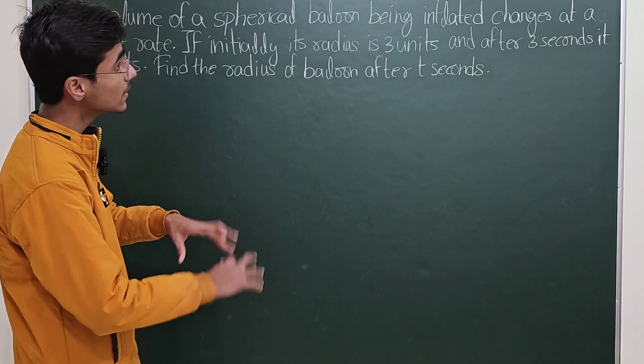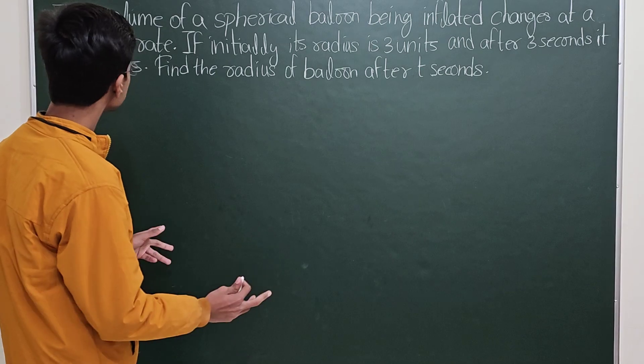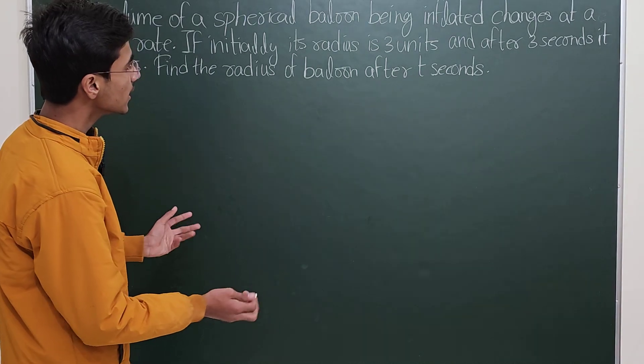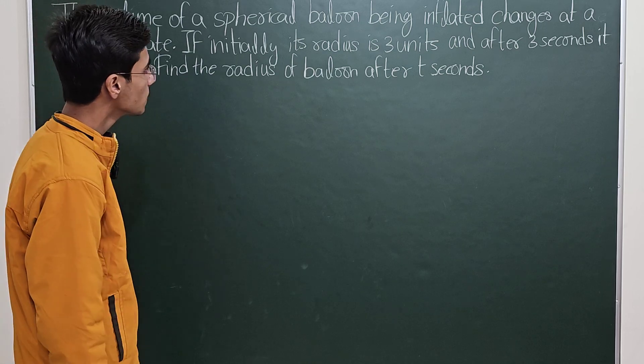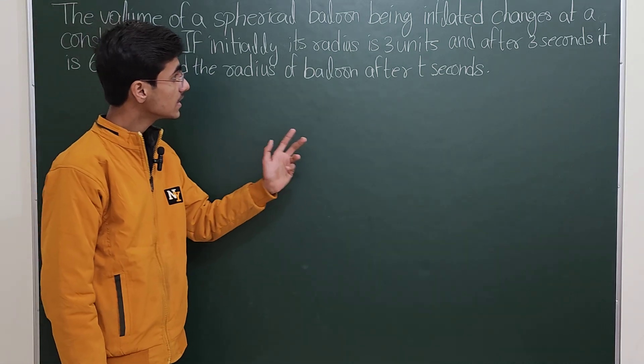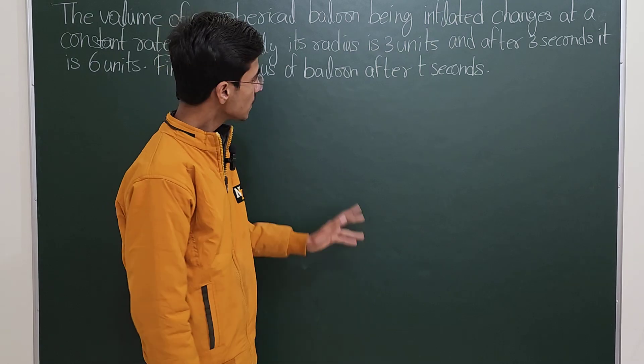The volume of a spherical balloon being inflated changes at a constant rate. If initially its radius is 3 units and after 3 seconds it is 6 units, find the radius of balloon after 10 seconds.